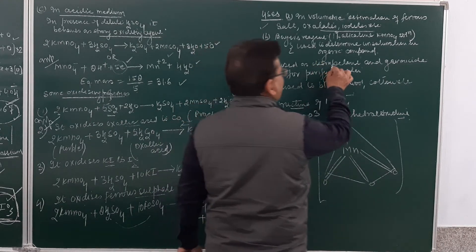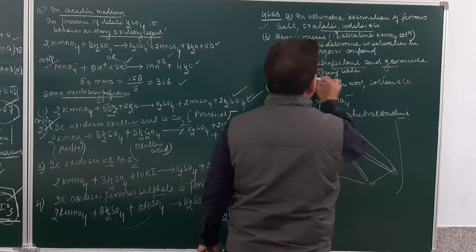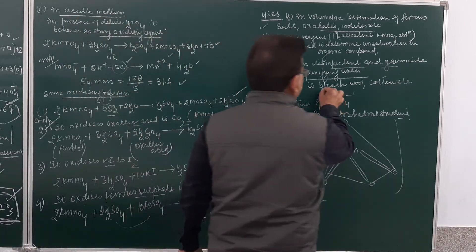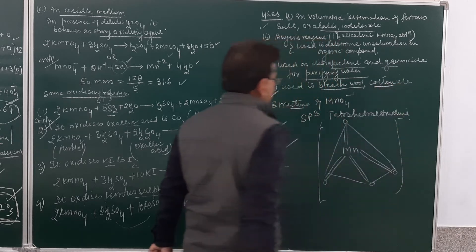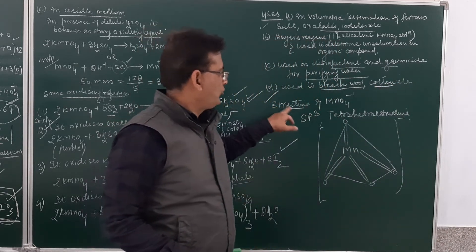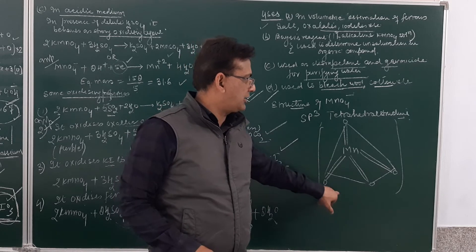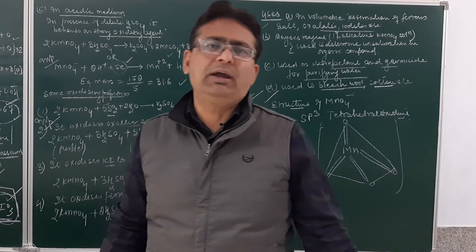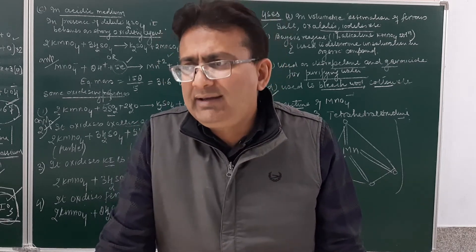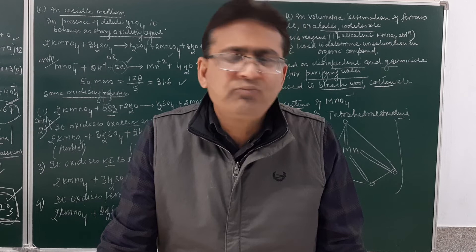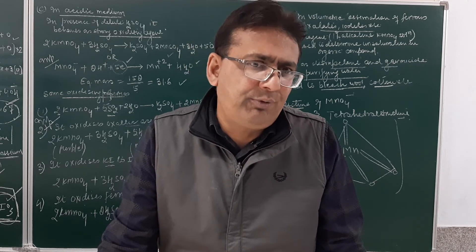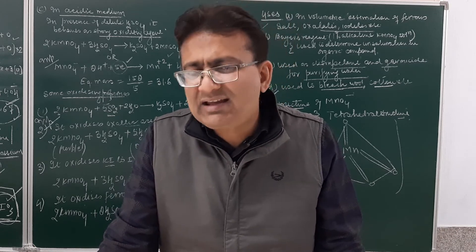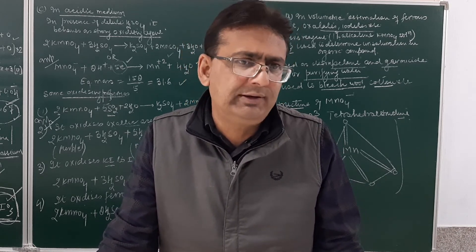KMnO4 is used as a disinfectant and germicide for purifying water, and it is used to bleach wool, cotton, etc. The structure of the permanganate ion is SP3 hybridized and has a tetrahedral structure. This concludes our discussion of KMnO4. In the next lecture, we will cover potassium dichromate and a brief discussion of D and F block elements. Thank you.